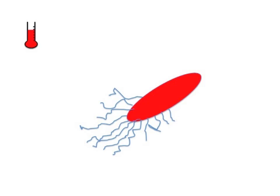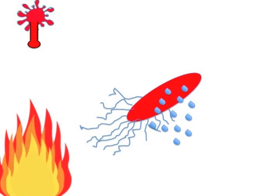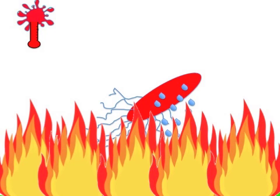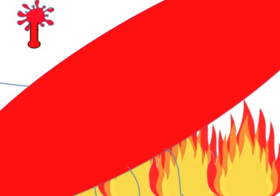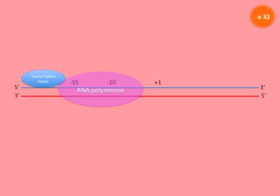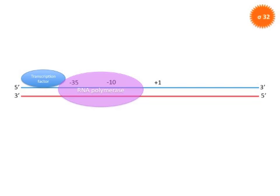When E. coli is subjected to a change in temperature from 30 to 42 degrees Celsius, different events occur to save the cell that all can be sensed in the cytoplasm of the bacteria. Sigma 32, a subunit of RNA polymerase, stimulates the transcription of genes encoding heat shock proteins, HSPs.